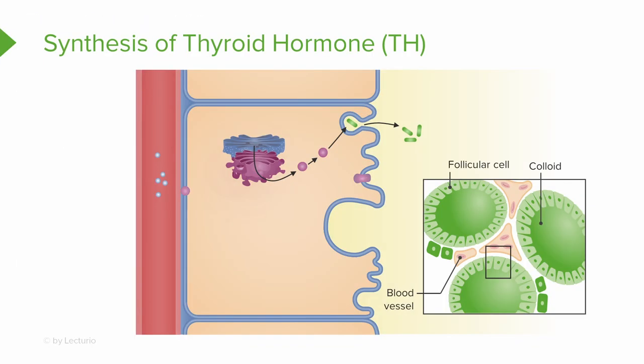The thyroid gland stores hormones extracellularly in the follicle lumen until triggered by thyroid stimulating hormone to release them. There are seven steps involved in the synthesis of thyroid hormone.